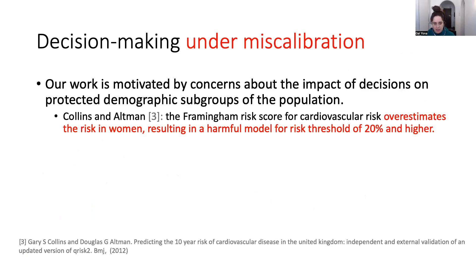The question of looking at the impact of decisions on protected demographic subgroups is also a practically relevant concern. One example is a study by Collins and Altman showing that the Framingham risk score — a popular risk score for estimating cardiovascular risk — when evaluated on a British cohort, overestimates the risk in women, which results in a harmful model if you use it for thresholds of 20% or higher. These kinds of concerns really arise in practice.